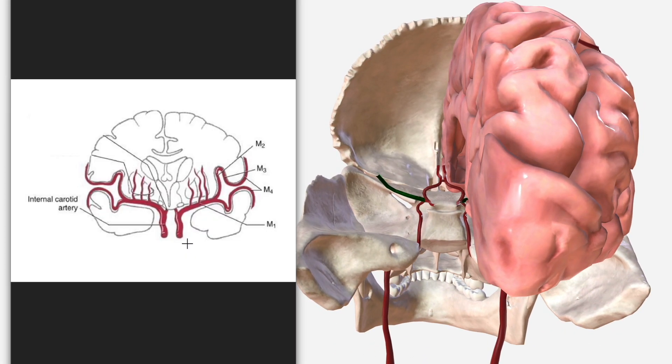To describe this morphology, the MCA is divided into four separate segments, M1 to M4, which are probably best understood with a 2D image like this. Here we have the internal carotid artery and the MCA branching off it. The M1 segment is highlighted in dark green, which extends from the ICA until its division into superior and inferior terminal branches.